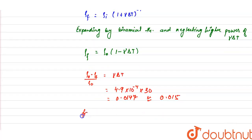So fractional change in density comes out to be 1.5×10^-2.